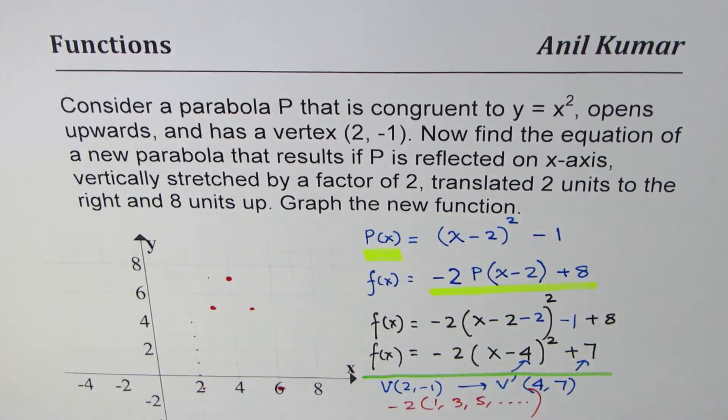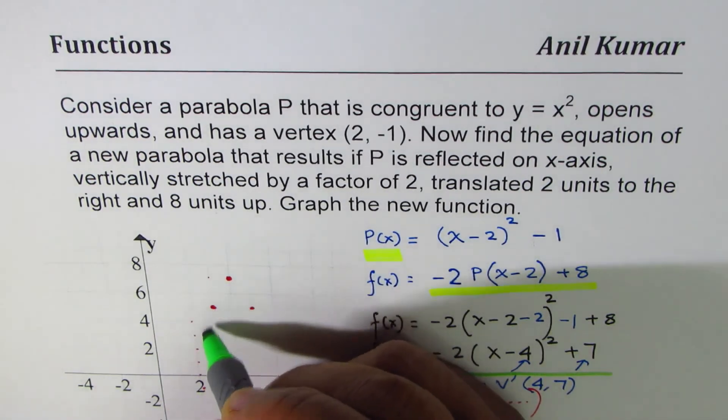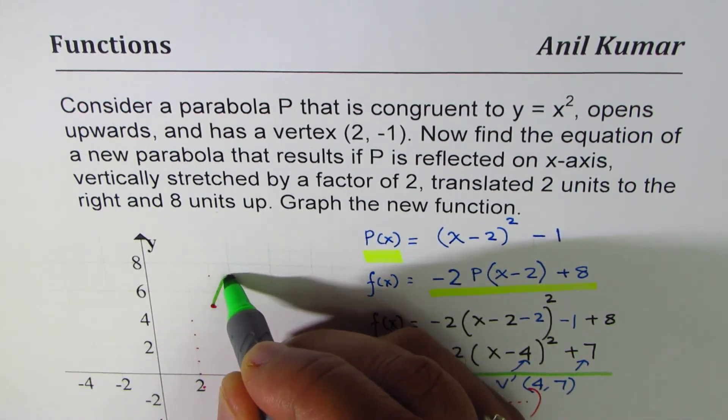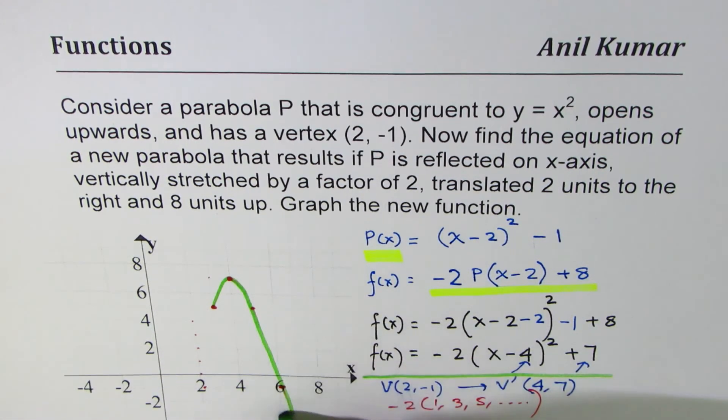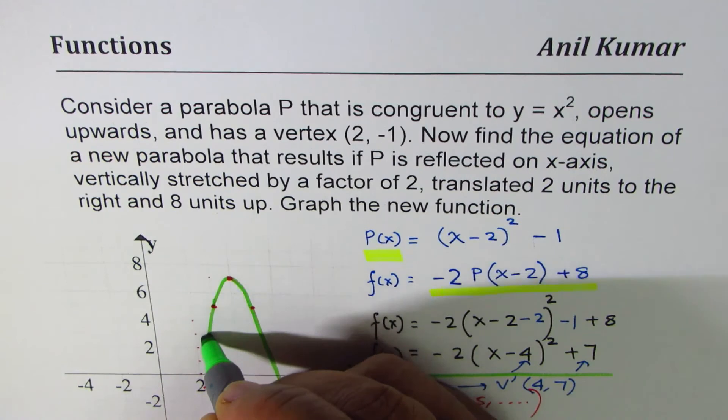And from symmetry, that will be your point. And join these points to sketch the parabola. Remember, this part should be a curved part, not a point. So that is how you get your parabola.